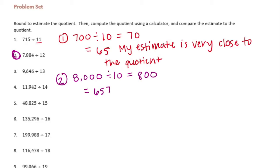So if we compare 657 to 800, I'm gonna say that it's kinda close. It's not thousands off — it's about 150 off. So I'm gonna say that it's close to the estimate.